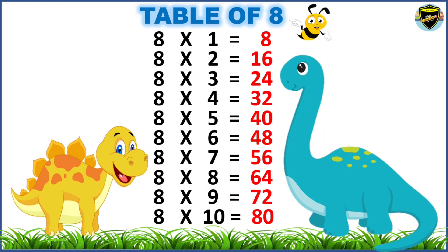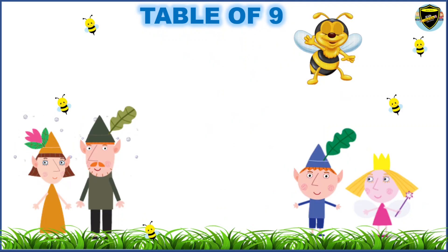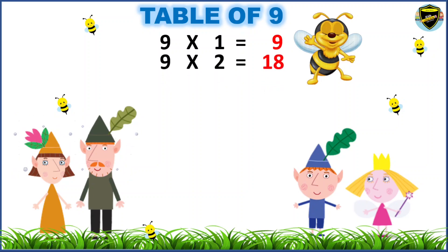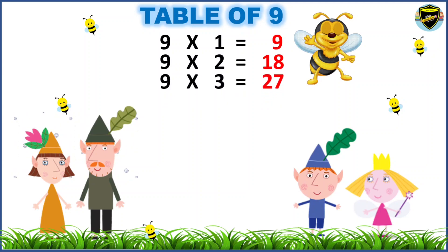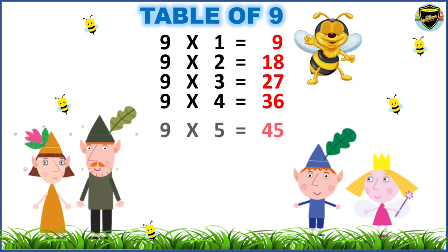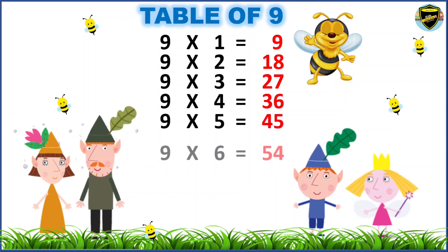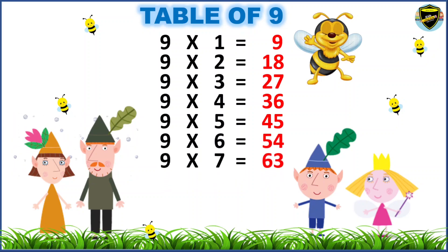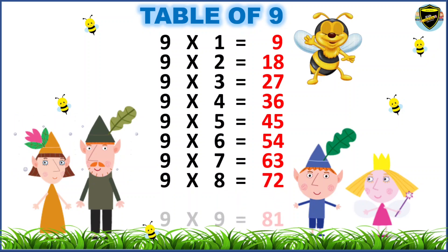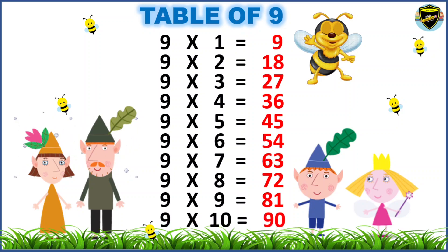Now, let's learn the table of 9. 9 1s are 9. 9 2s are 18. 9 3s are 27. 9 4s are 36. 9 5s are 45. 9 6s are 54. 9 7s are 63. 9 8s are 72. 9 9s are 81. 9 10s are 90.